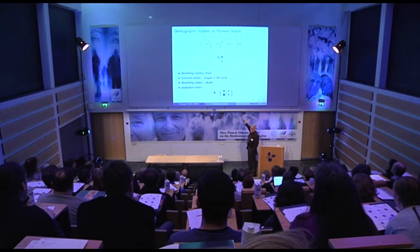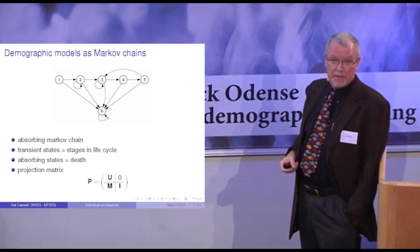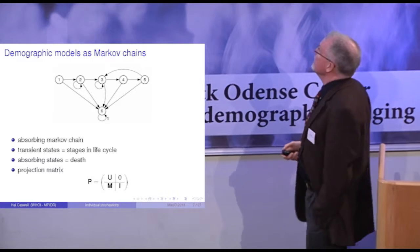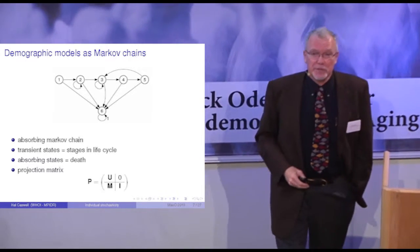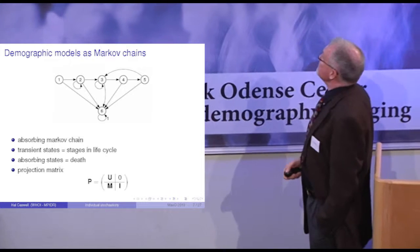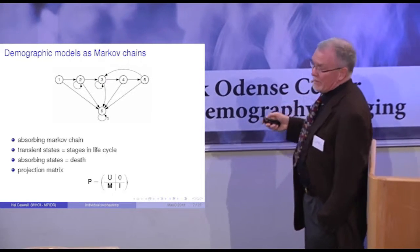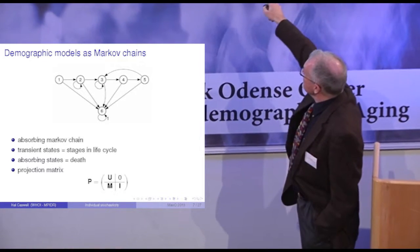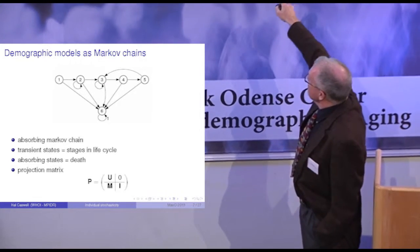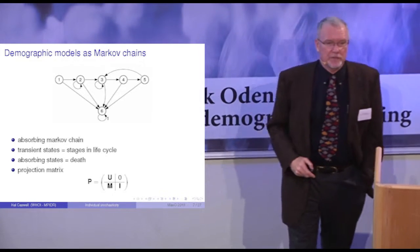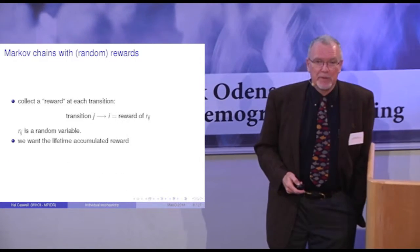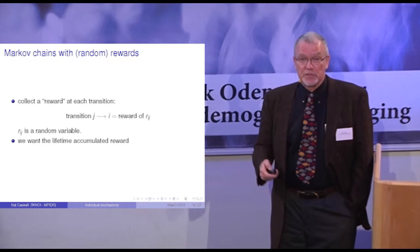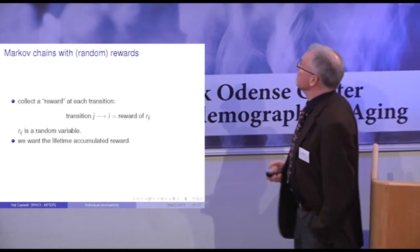Individuals die eventually, and once you die, you stay dead. This is called an absorbing Markov chain — you get absorbed — and there's a transition matrix that you construct out of this, which represents the probabilities of transition.